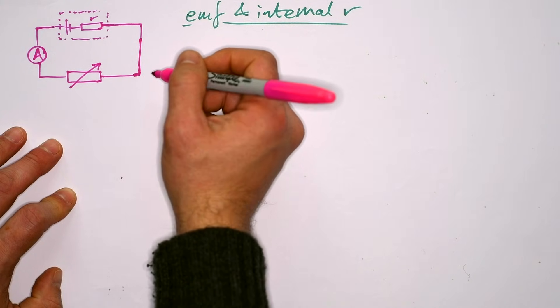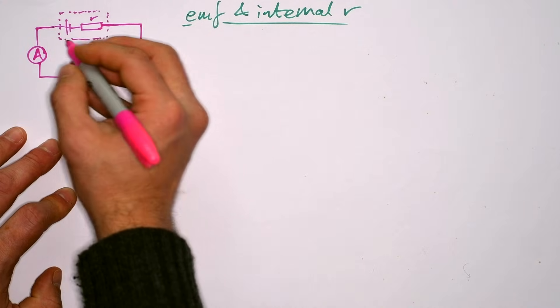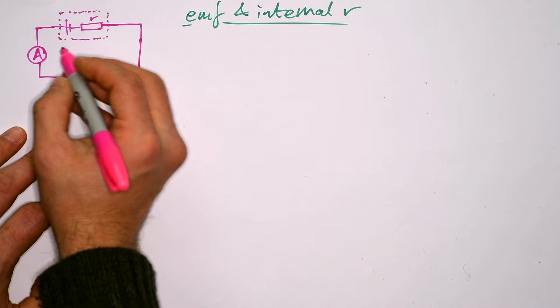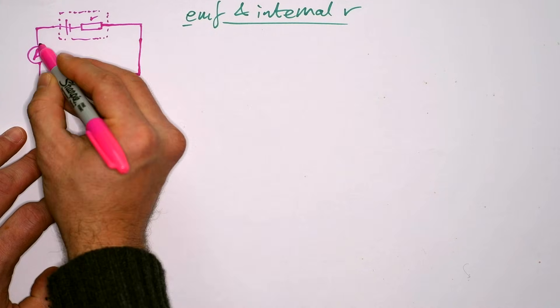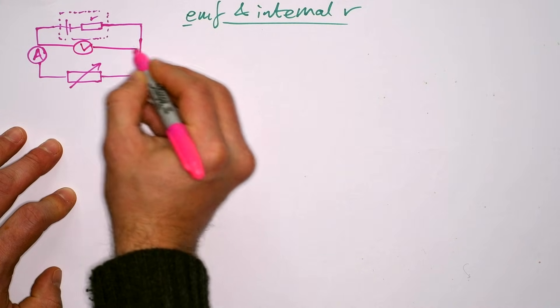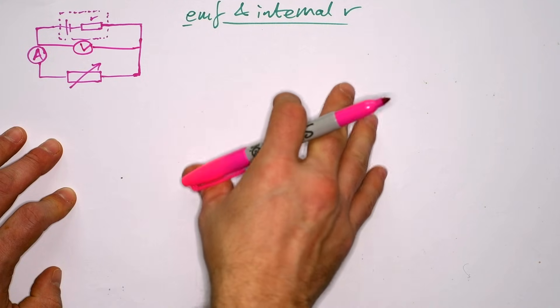We want to know the PD across the terminals as well. Actually, it doesn't really matter where you put the voltmeter, so long as it goes in between the battery and the load resistor. So we can just put it straight across the circuit like that.